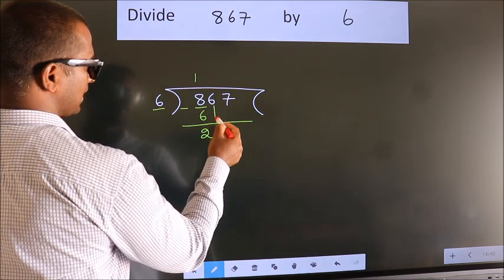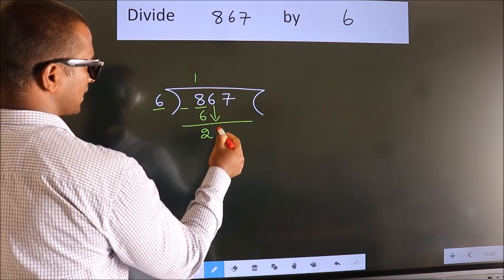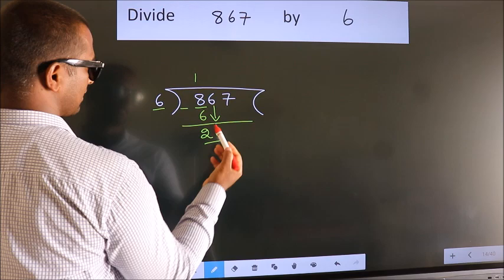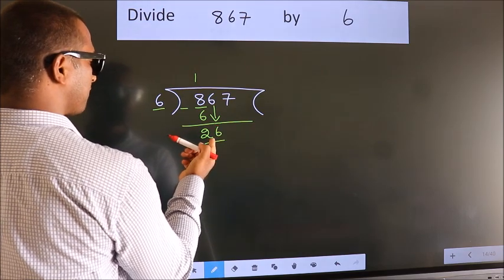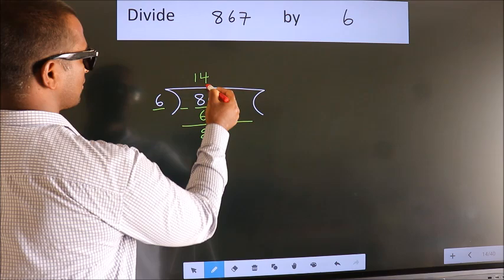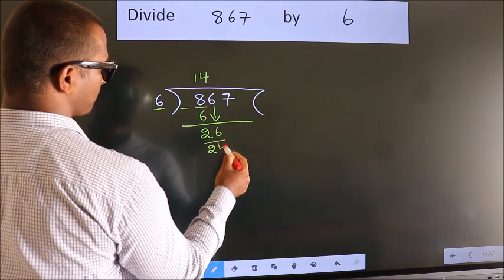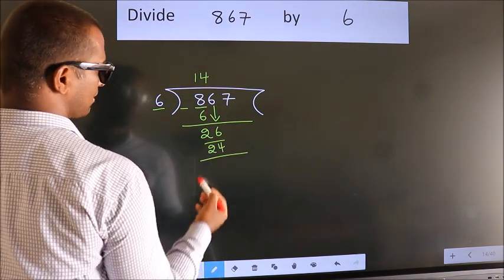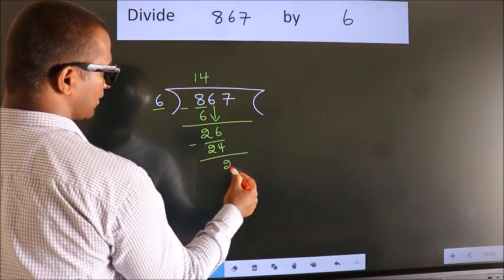After this, bring down the beside number. So 6 down. So 26. A number close to 26 in the 6 table is 6 times 4 is 24. Now we subtract. We get 2.